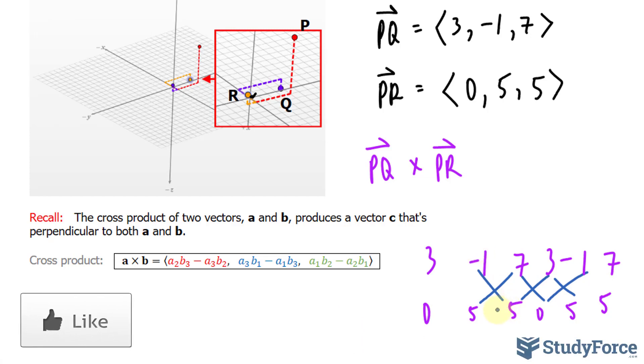Negative 1 times 5 is negative 5, minus the product of these two numbers. So negative 5 minus 35 is negative 40. Let's do the same thing here. 7 times 0 is 0, minus 15 is negative 15.